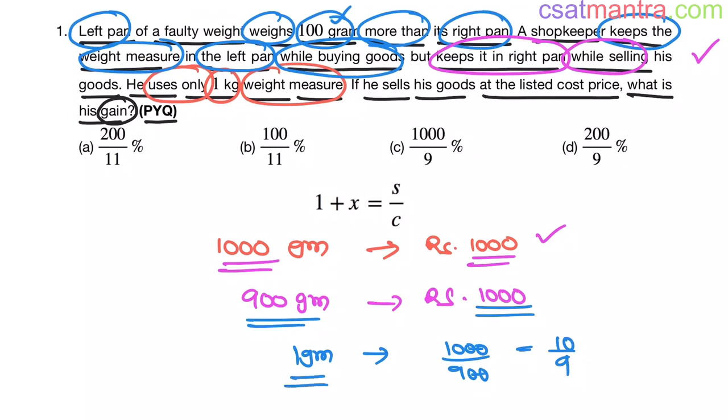So he is selling 1 gram at 10 by 9 rupees. This is clear, right? See, there are 2 cases, one is while buying goods, second one is while selling. When he is buying, he is keeping the weight in the left pan. So he would be buying 1100 grams for 1000 rupees. 1000 rupees is the market price of 1000 grams. Now while selling, he would be selling 900 grams at this market price. Because left pan is already weighing 100 grams more.